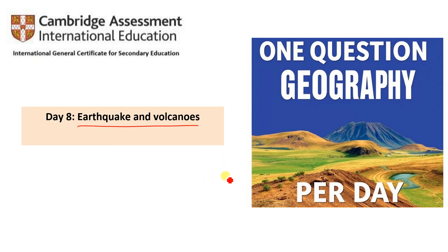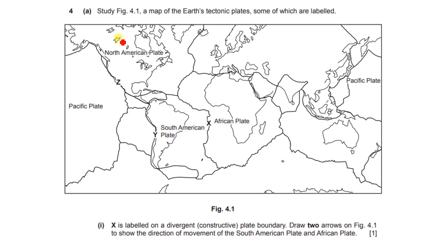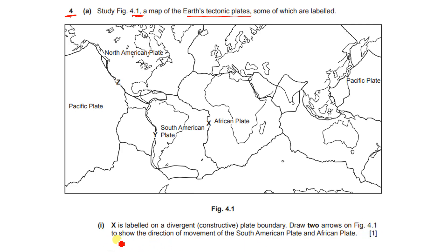Here we have question four. It says: study figure 4.1, which is a map of the tectonic plates, some of which are labeled. X is labeled on a divergent or constructive plate boundary. Now draw two arrows on figure 4.1 to show the direction of movement of the South American plate and the African plate.